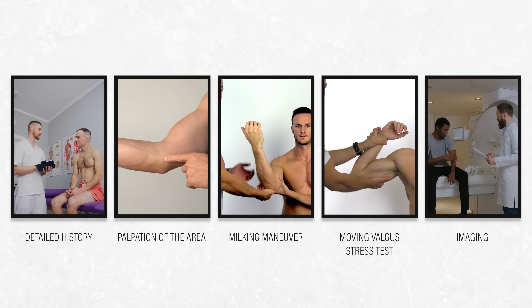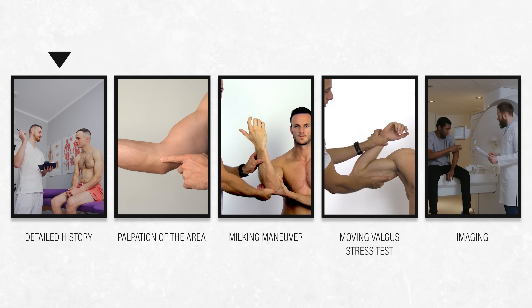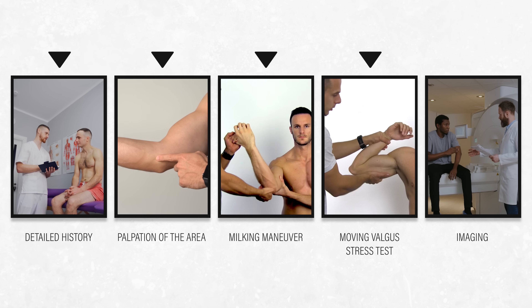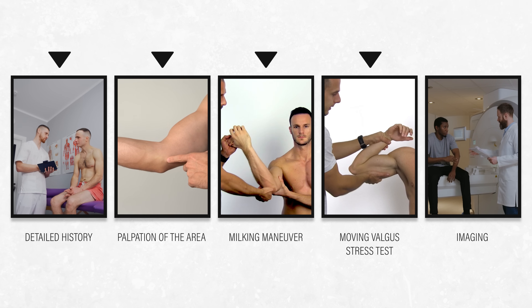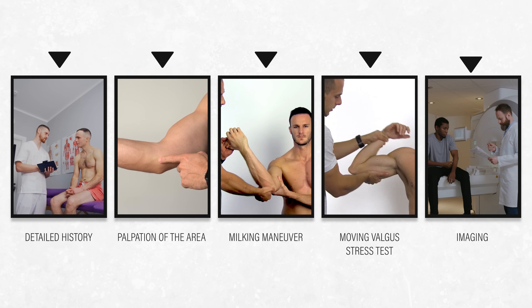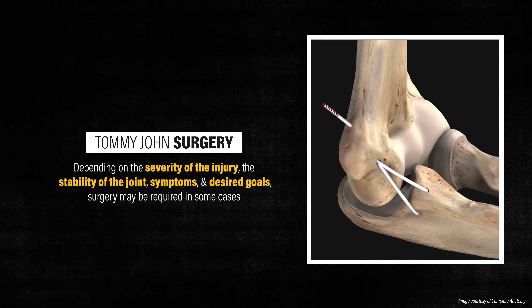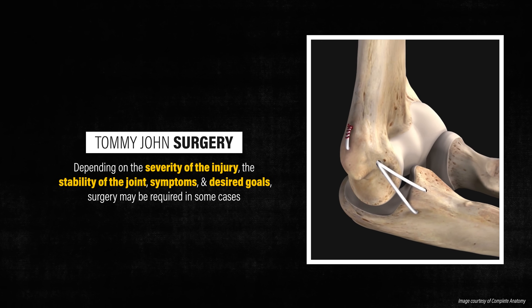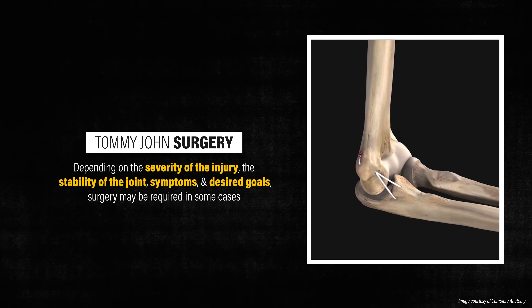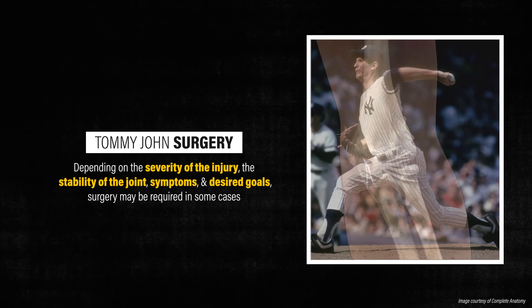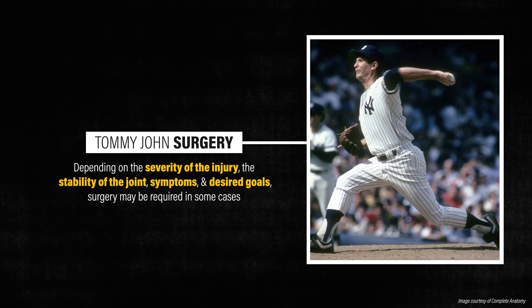Assessment of the injury may include a detailed history, palpation of the area, orthopedic tests like the milking maneuver and moving valgus stress test, and imaging. Depending on the severity of the injury, the stability of the joint, symptoms, and desired goals, surgery may be required in some cases. This is frequently referred to as Tommy John surgery, named for the pitcher who first had the surgery in 1974.